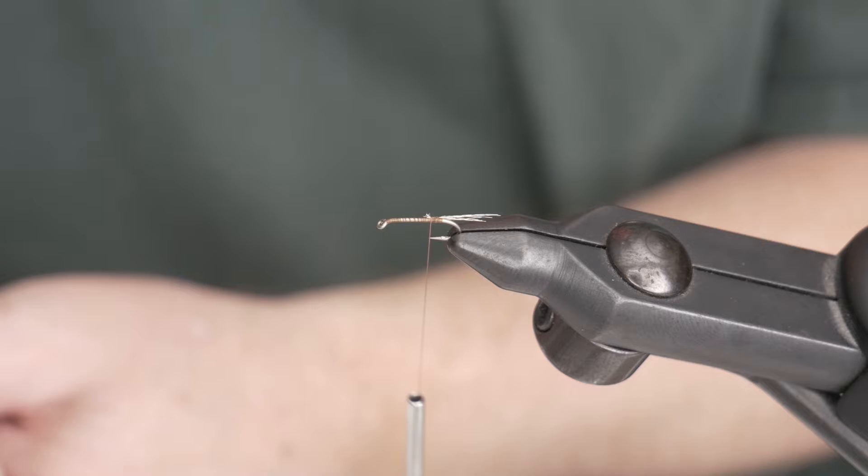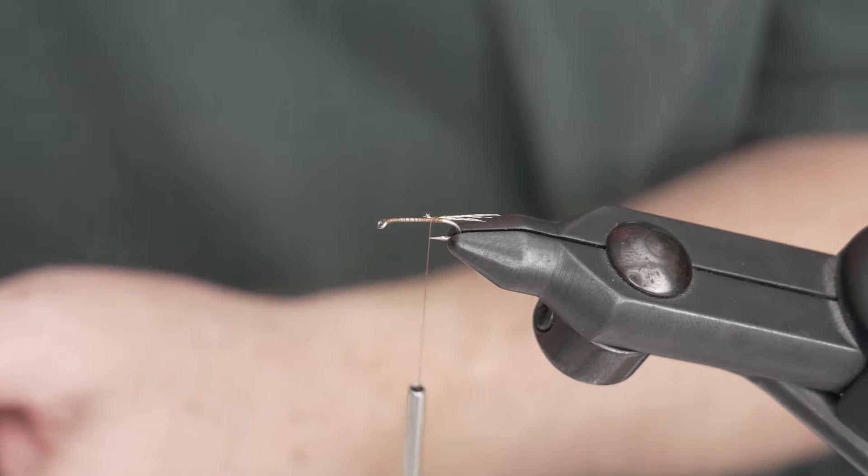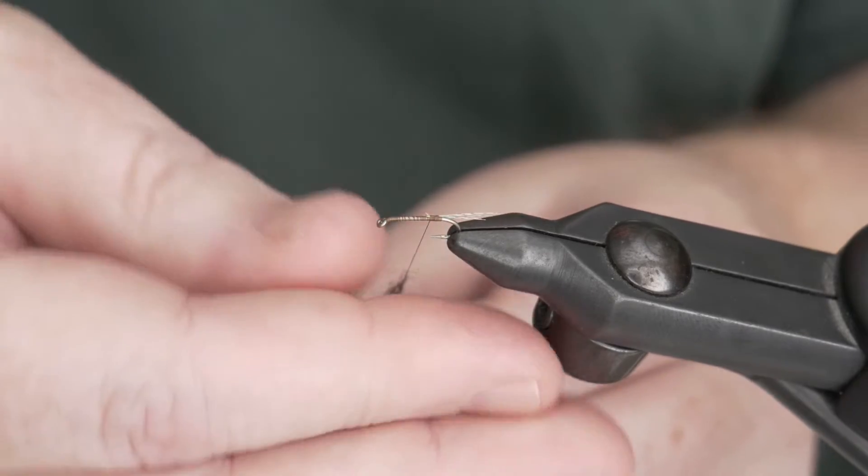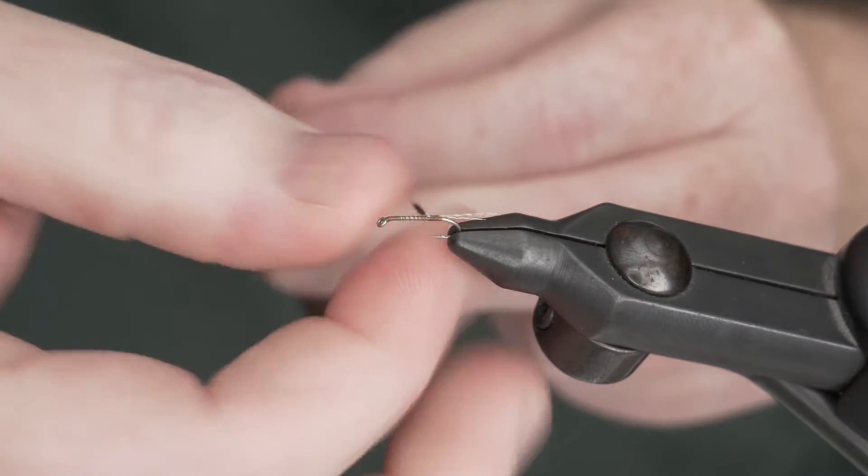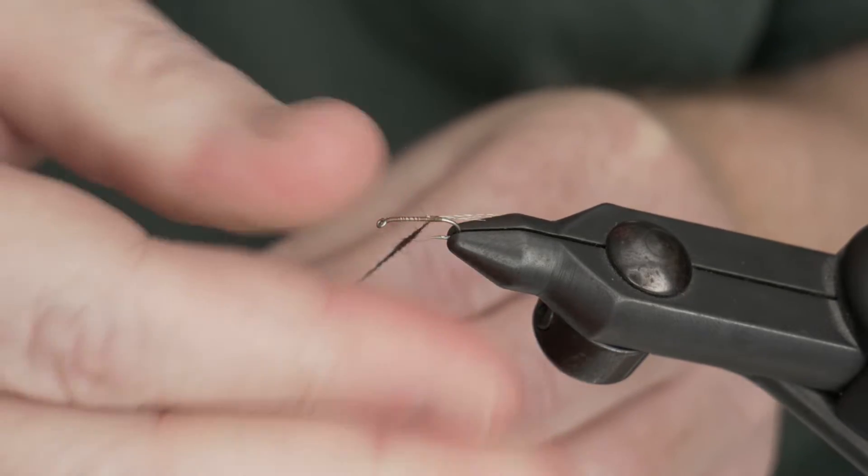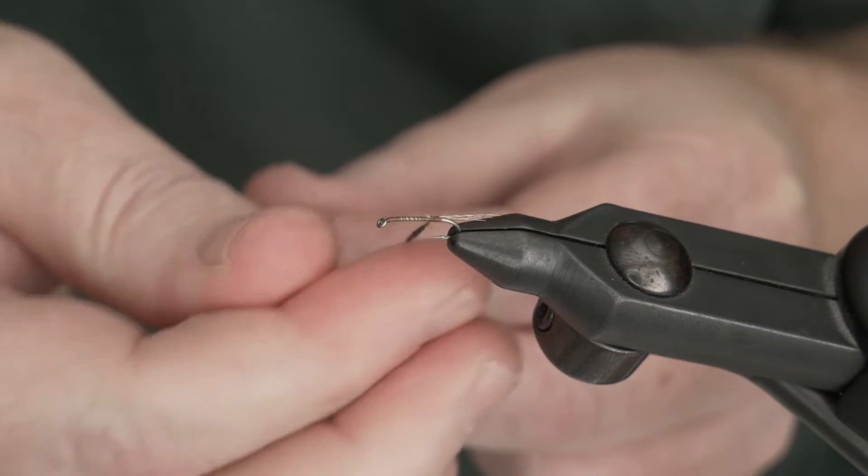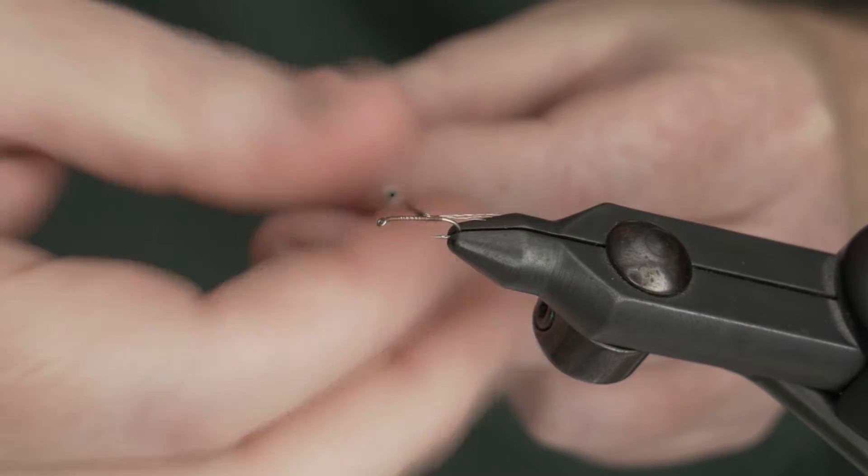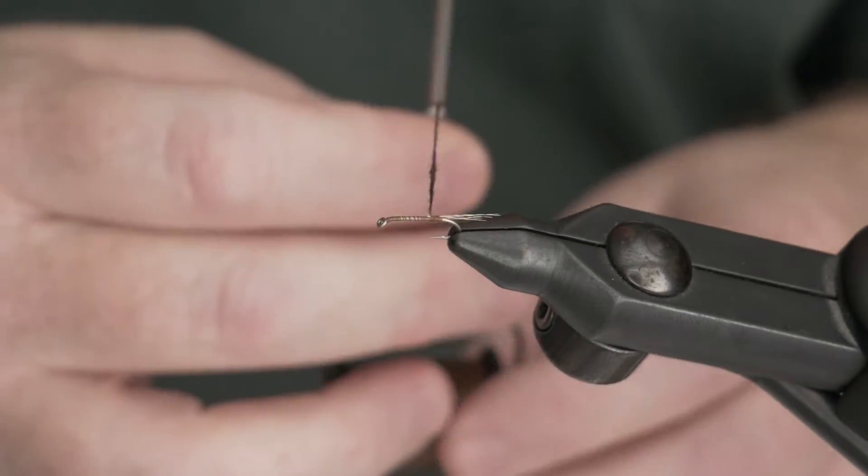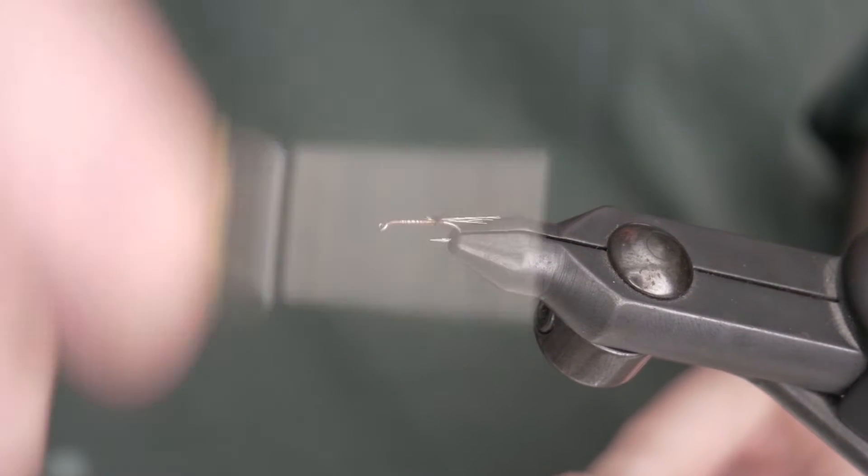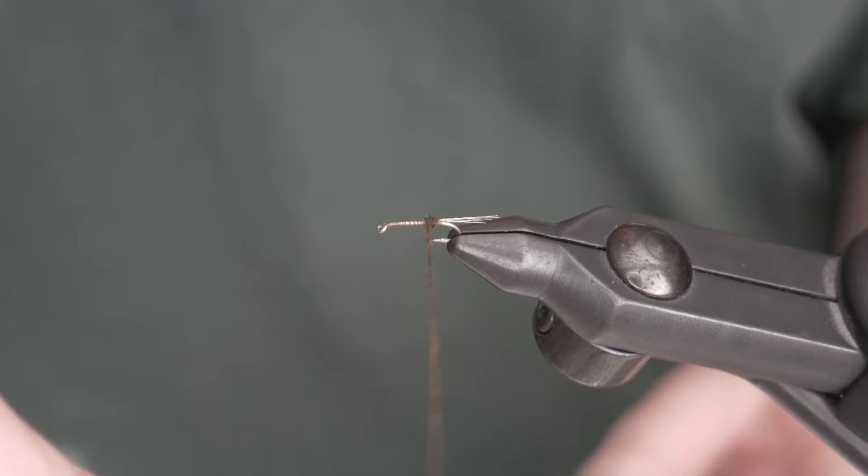Next we're going to tie in our dark brown lifestyle nymph dubbing. We're going to want to put this very sparse on our thread. Like I said, we want to tie a nice, thin body on this fly. I don't want a lot of guard hair sticking out of it. Very thin body fly.